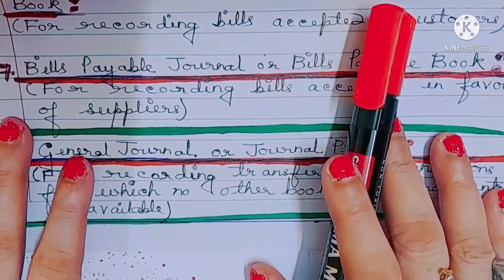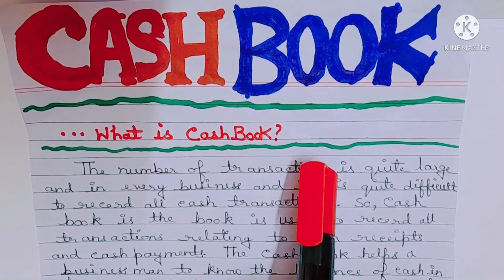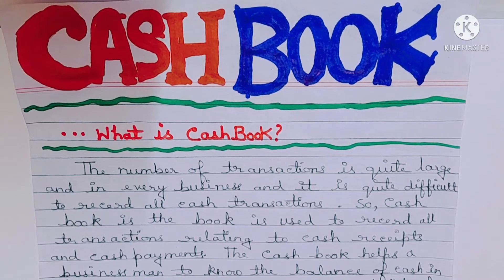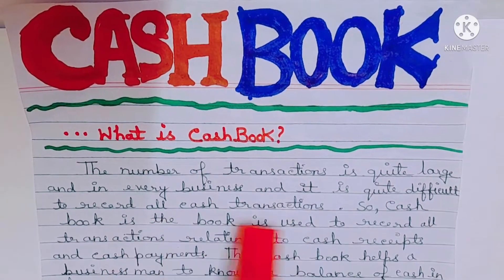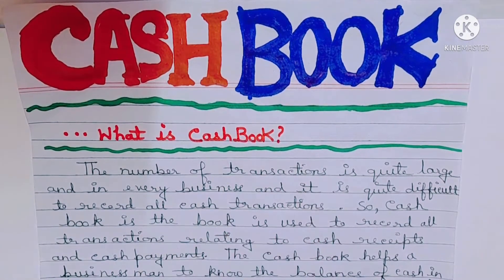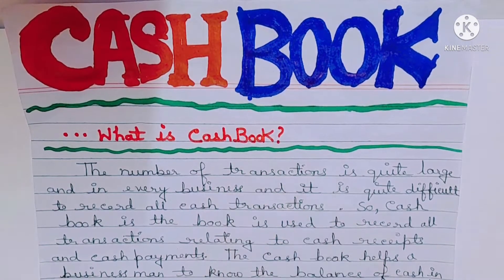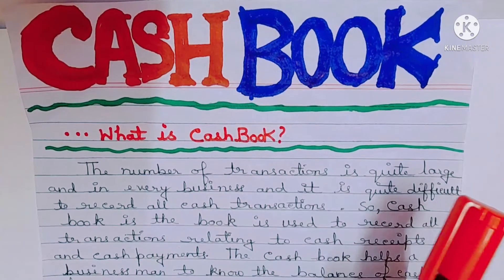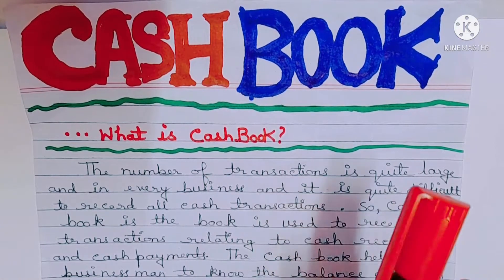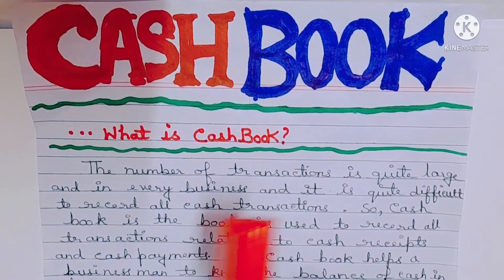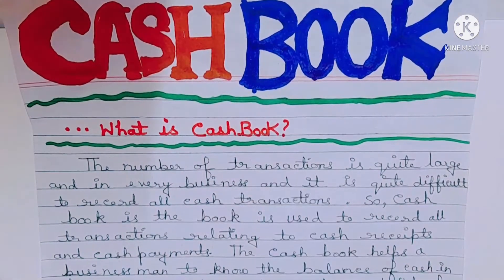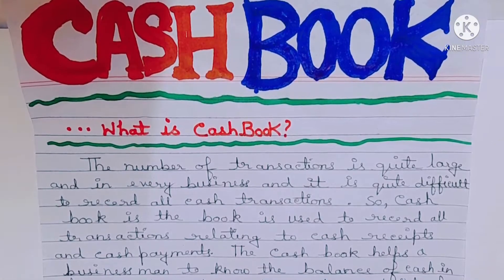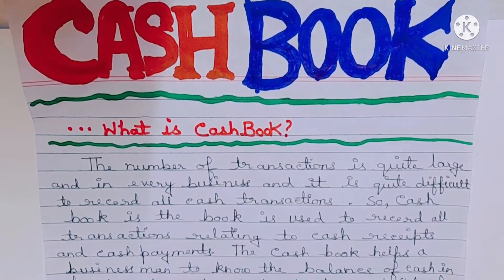Today we will discuss cash book. The number of transactions is quite large in every business and it is quite difficult to record all cash transactions. Cash book is the book used to record all cash transactions relating to cash receipts and cash payments only. No credit transactions are recorded in the cash book. Cash book helps a businessman to know the balance of cash in hand and cash at bank at any point of time.